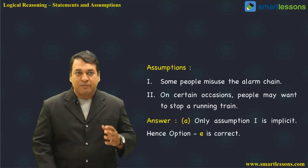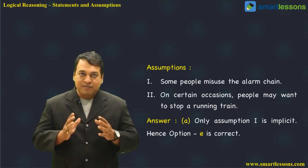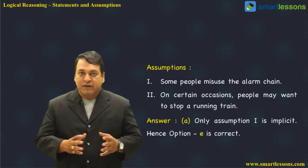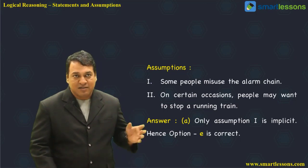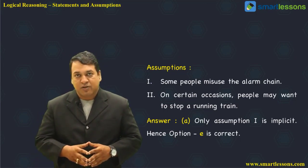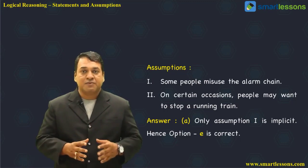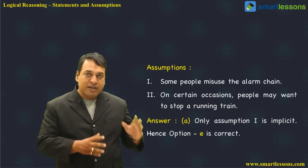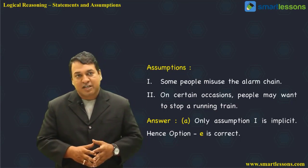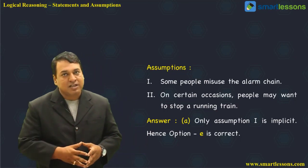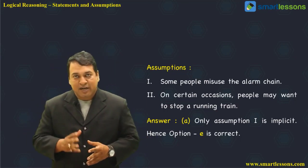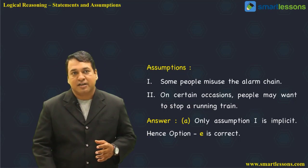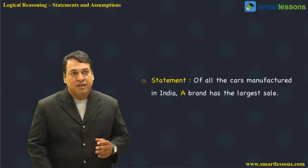From the statement, it is mentioned that to stop the train you can pull the chain, but penalty for improper use is 500 rupees. That means assumption one — some people misuse the chain — is correct, because it is assumed that many times people pull the chain even when there is no emergency. For that reason, a fine of 500 rupees is imposed. So only assumption one is implicit — option A is the correct answer.